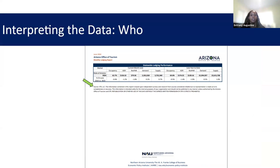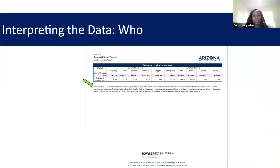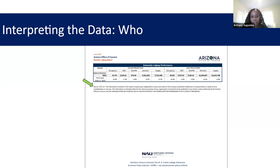So let's break down this page. Who does this data come from? This data comes from STR — Smith Travel Research — as you can see in the green arrow. We partner with Northern Arizona University to ensure compliance when sharing this data. STR has really strict data privacy and sharing rules, so we've got to make sure that we're sharing it in a way that's going to work.